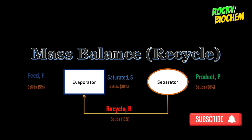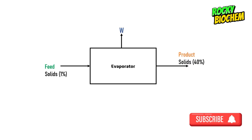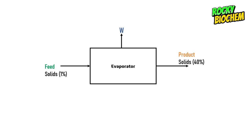Now, before I start with the business of the day, let me do a very quick recap. From my previous videos on mass balance, we came to understand that in unit operation, mass in is always equal to mass out. In other words, the sum of the masses of anything entering the system should be equal to the sum of anything exiting the system.